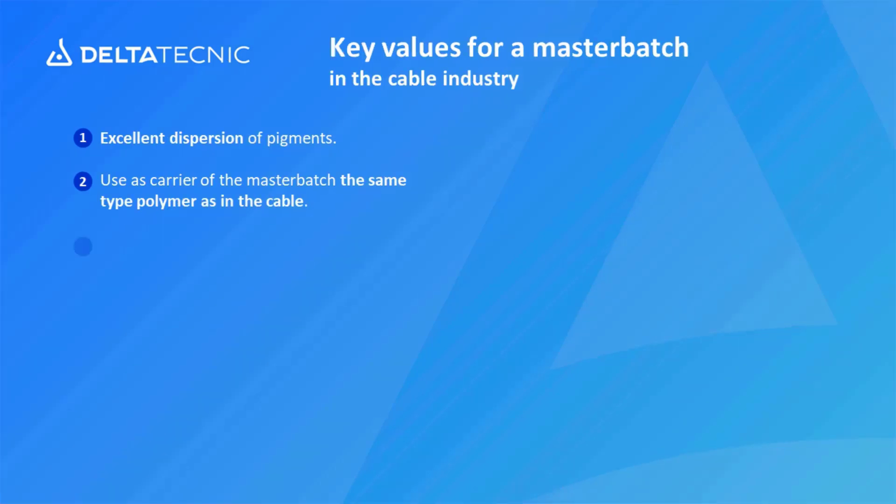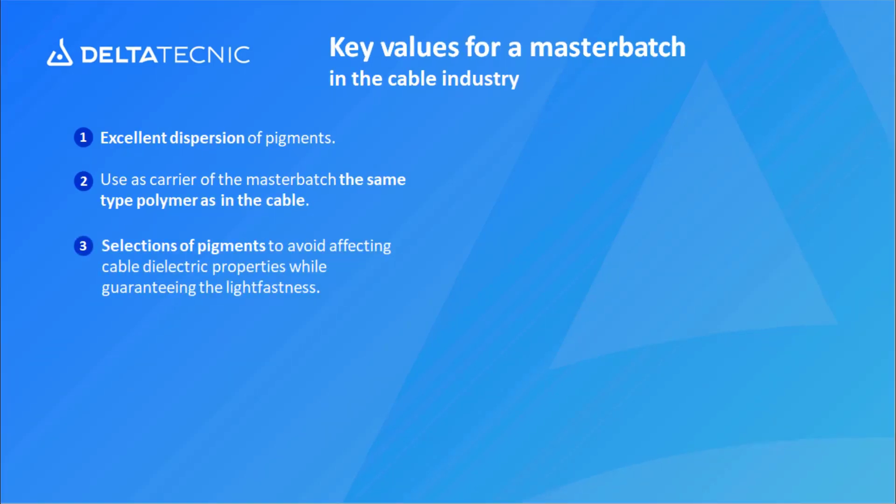Point three: the selection of pigments. The pigments have to be selected so as to avoid affecting cable dielectric properties, while guaranteeing light fastness. They should also not interfere with other effects of the masterbatch. For instance, there are masterbatches destined for cables that work with a self-curing agent — the masterbatch manufacturer must select pigments which do not interfere with this curing agent.